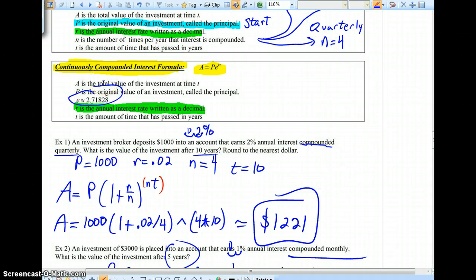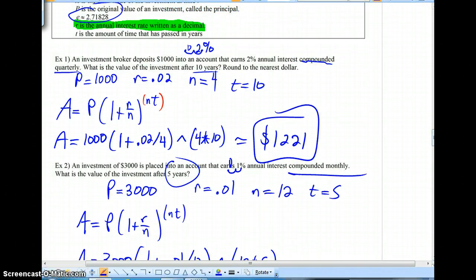E is a number in higher mathematics that we see quite a bit. It's very similar to a number like pi. It's called a transcendental number. It's an irrational number. It's about 2.71828, and thank goodness your calculator has that stored.